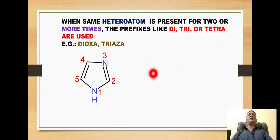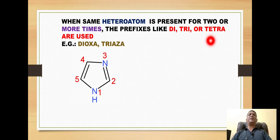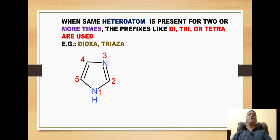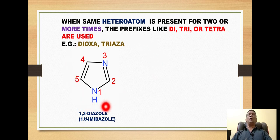Rule number two: when the same heteroatom is present two or more times, we use multiplying prefixes like di-, tri-, tetra-, or penta-. For example, if a ring contains two nitrogens, we use 'di' followed by the prefix 'aza' for nitrogen, making it 'diaza'. This ring is given the name 'diazole', where 'diaza' represents two nitrogens.